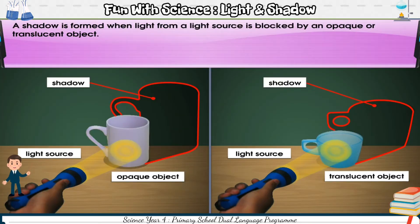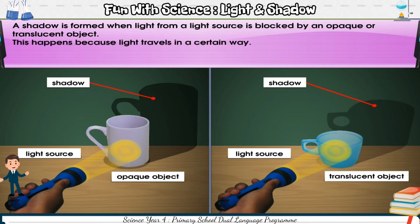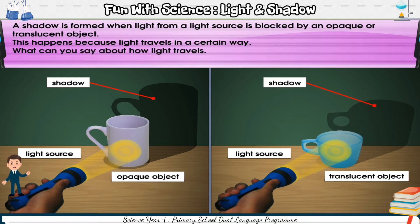A shadow is formed when light from a light source is blocked by an opaque or translucent object. This happens because light travels in a certain way. What can you say about how light travels? Discuss this with your friends.